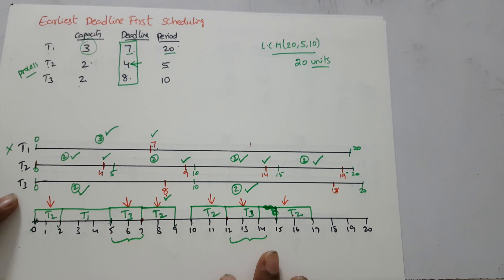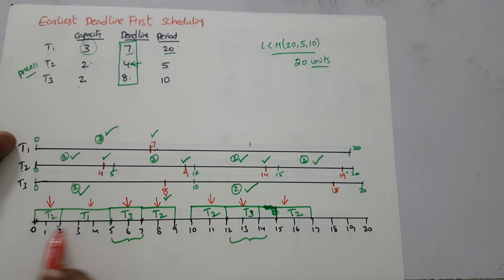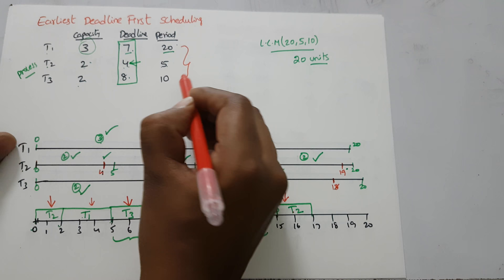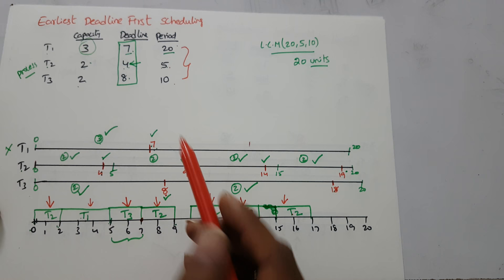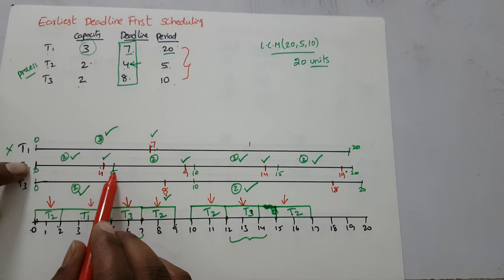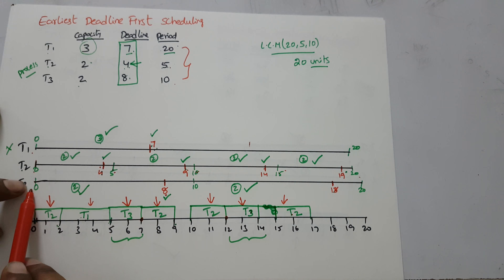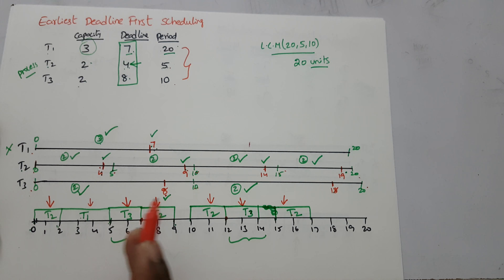This is how we use the Earliest Deadline First scheduling algorithm. First, note down the processes with their capacity, deadline, and period. Then make a timeline of twenty units, because the LCM of twenty, five, and ten is twenty. Distribute the deadlines for each period: for t2 the deadlines are four, nine, fourteen, and nineteen; for t1 the deadline is seven; for t3 the deadlines are eight and eighteen. Schedule each process so it executes before its deadline. This is how we solve the Earliest Deadline First algorithm.